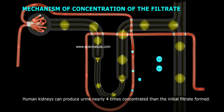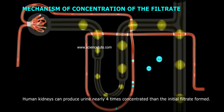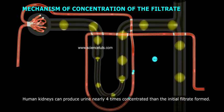Human kidneys can produce urine nearly four times more concentrated than the initial filtrate formed.